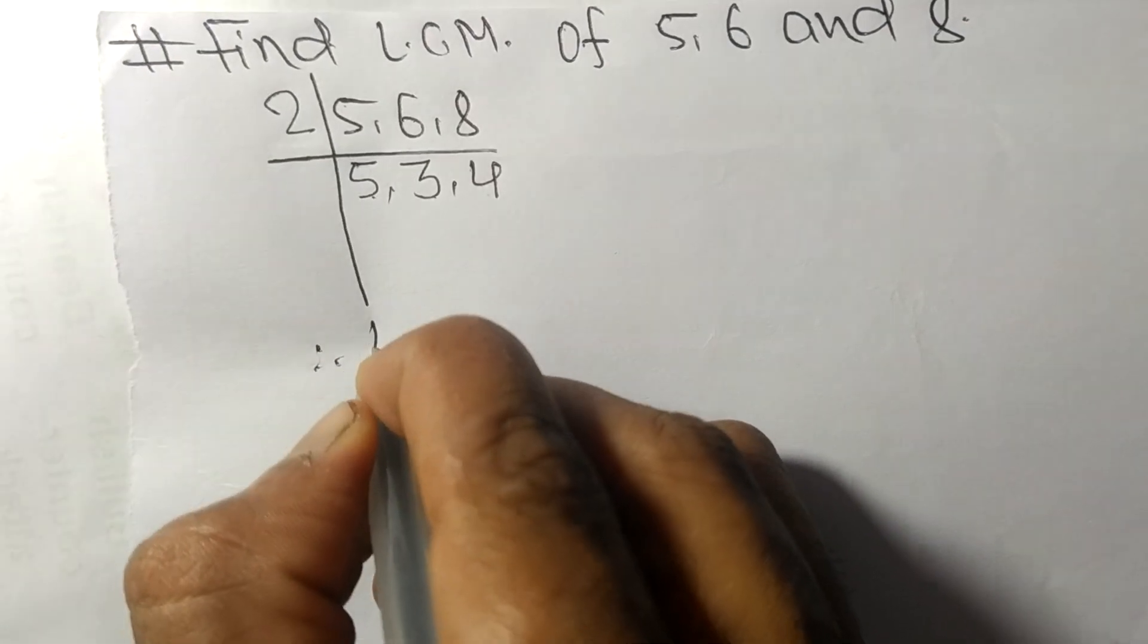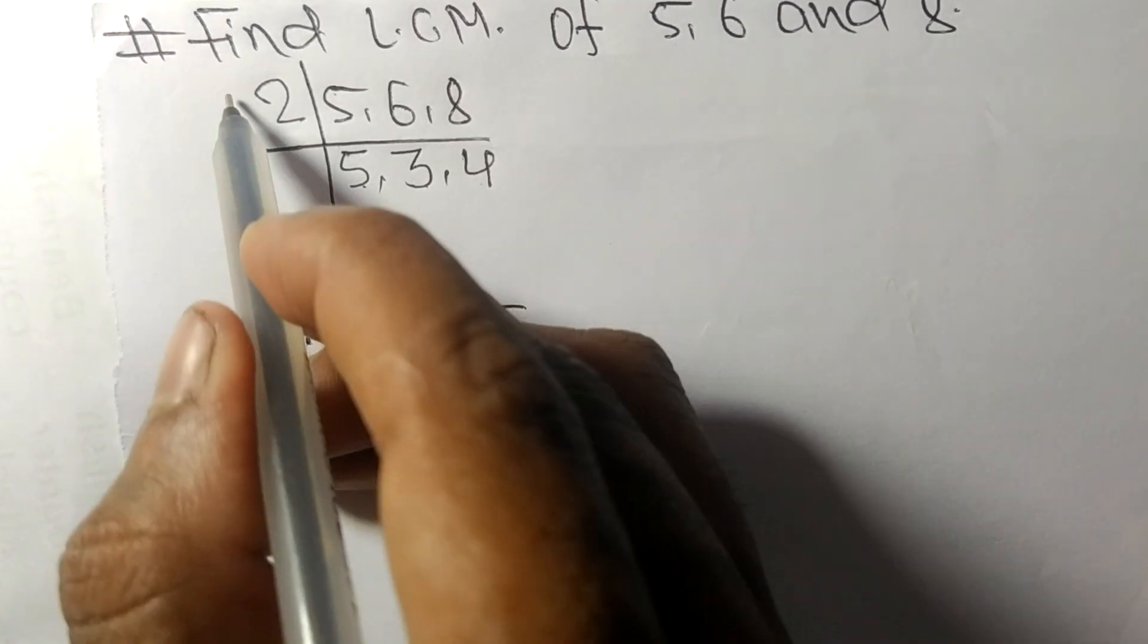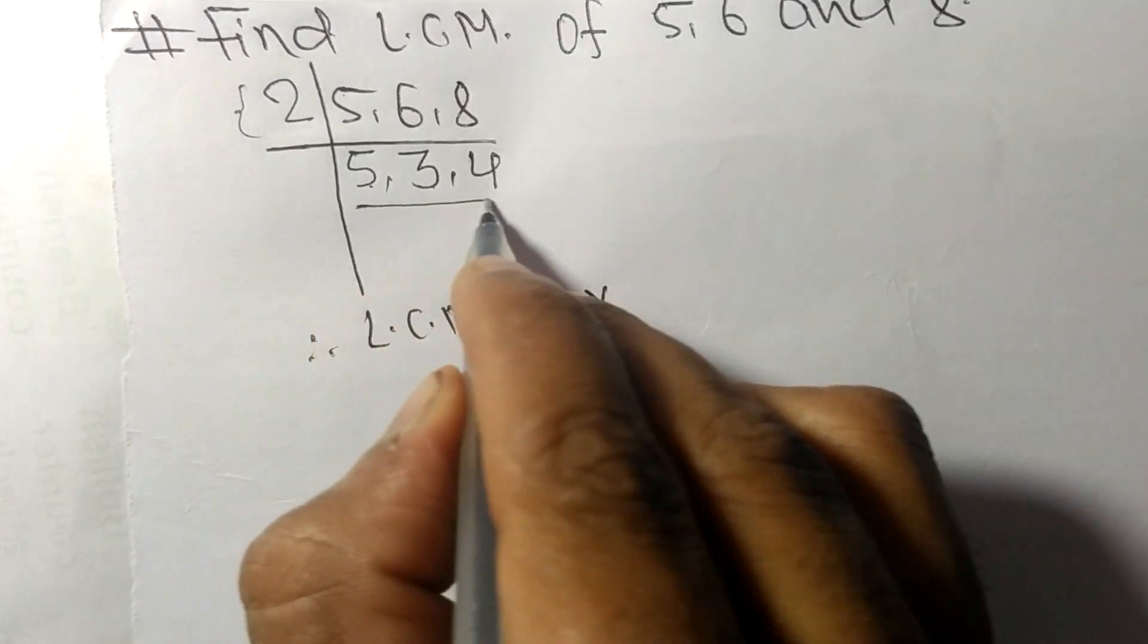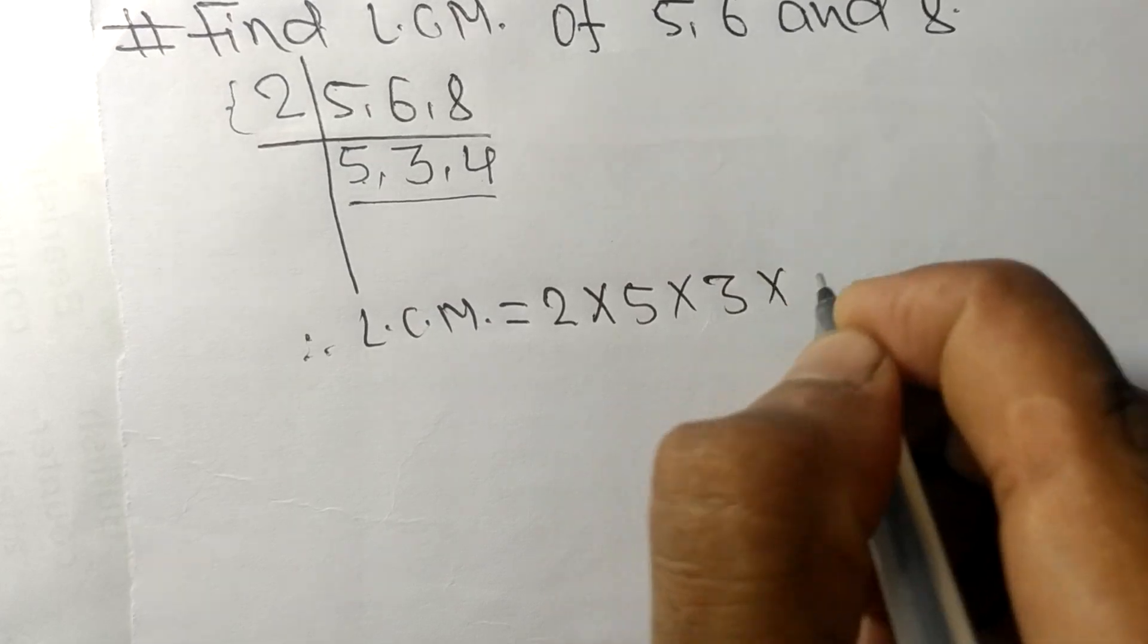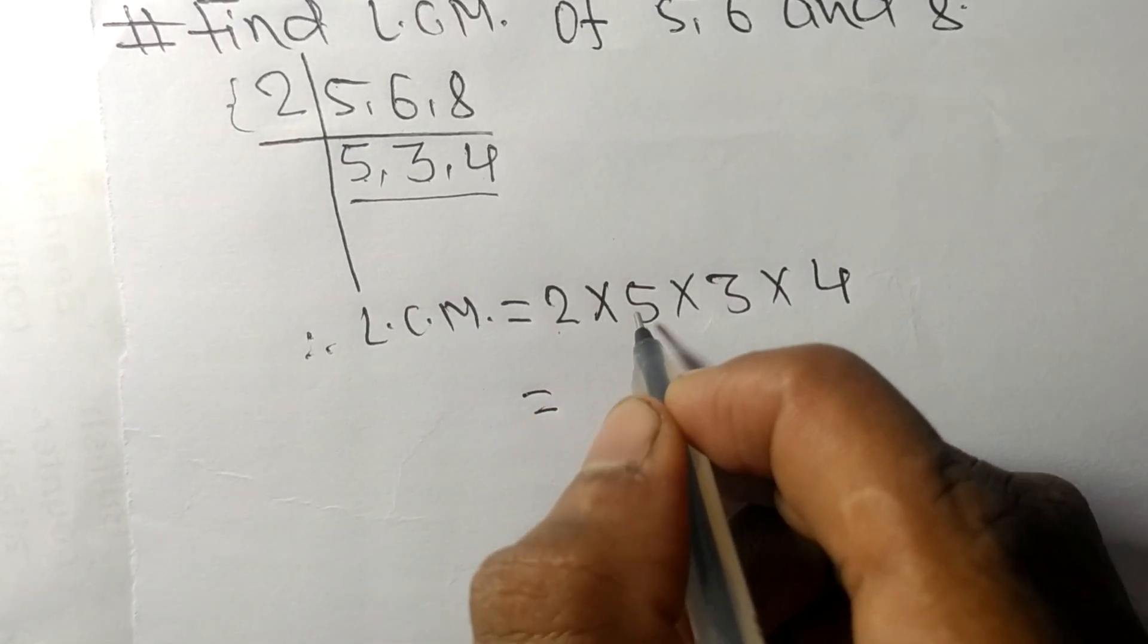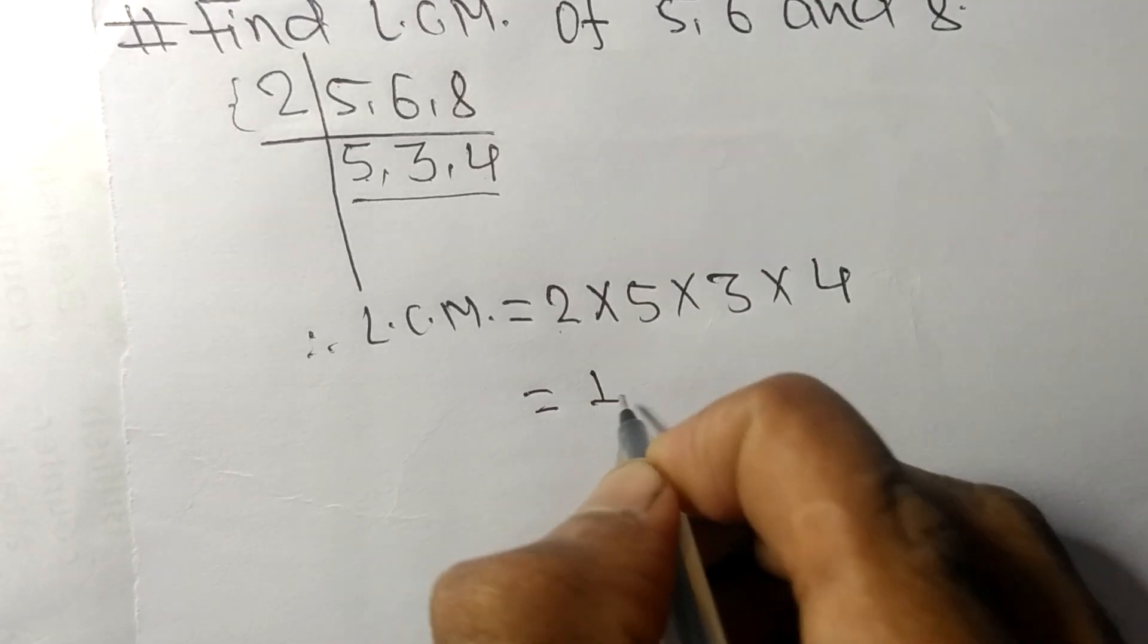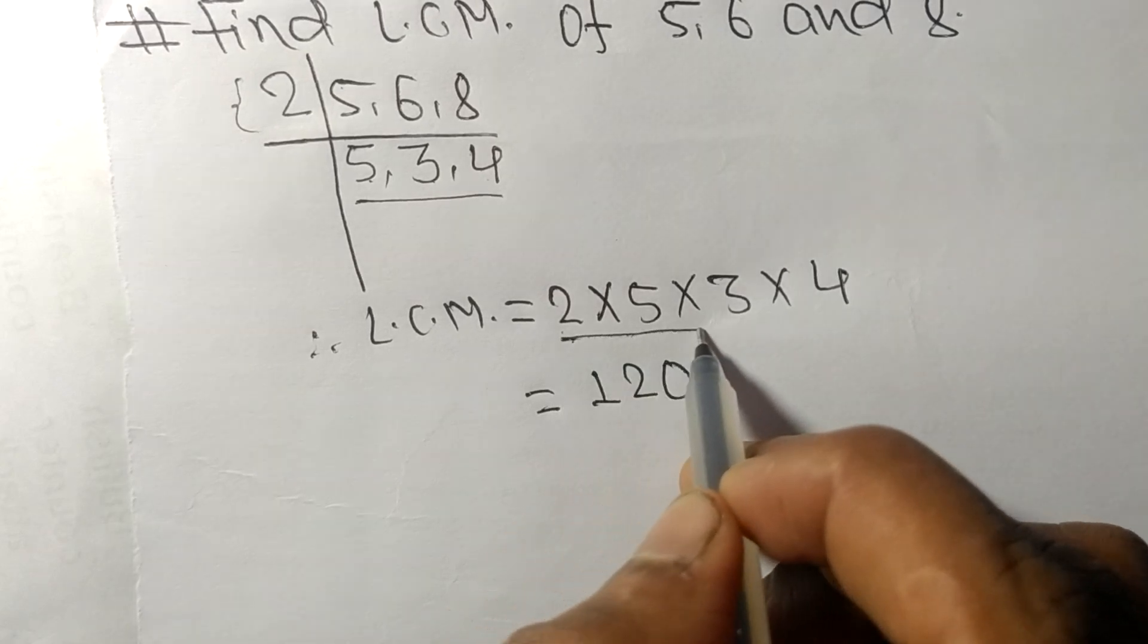Therefore, the LCM equals all the divisors and remaining numbers multiplied together. 2 times 5 equals 10, 10 times 3 equals 30, 30 times 4 equals 120. So by multiplying all these numbers, we get 120.